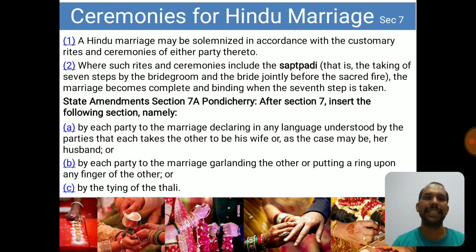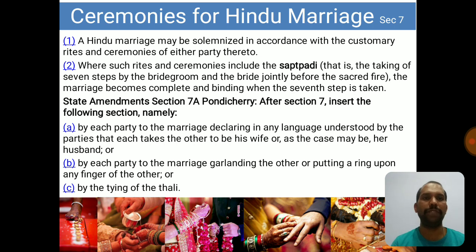Section 7(2) states: where such rites and ceremonies include Saptapadi — that is the taking of seven steps by the bridegroom and the bride jointly before the sacred fire — the marriage becomes complete and binding when the seventh step is taken. Saptapadi is mandatory in some ceremonies as per the practice of the family, community, or tribe. All seven steps must be completed, and when the seventh step is taken, the marriage becomes complete.